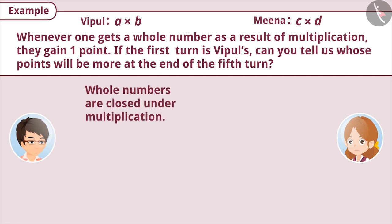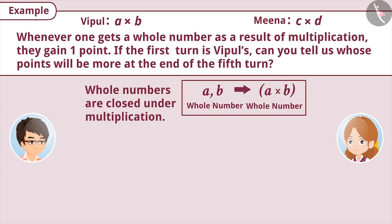Since whole numbers are closed under multiplication, that is, for any two whole numbers A and B, A multiplied by B will always be a whole number. Therefore, Vipul and Meena can pick any two whole numbers and each time they will get a whole number.